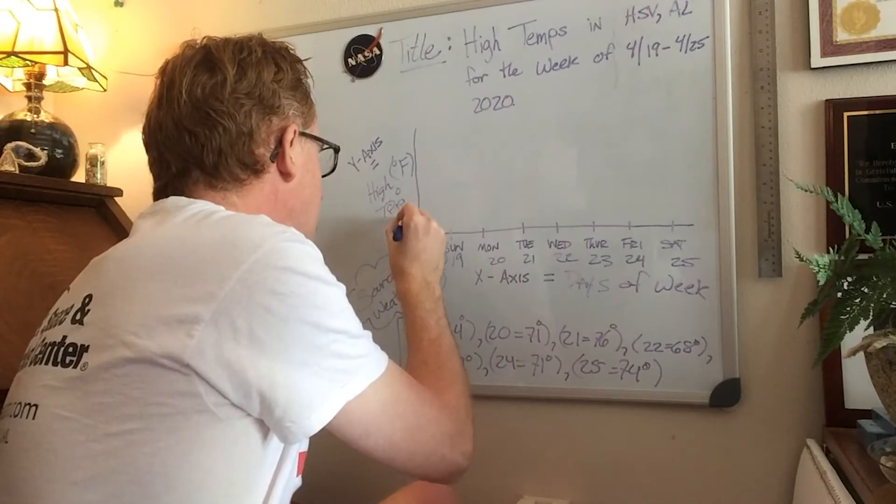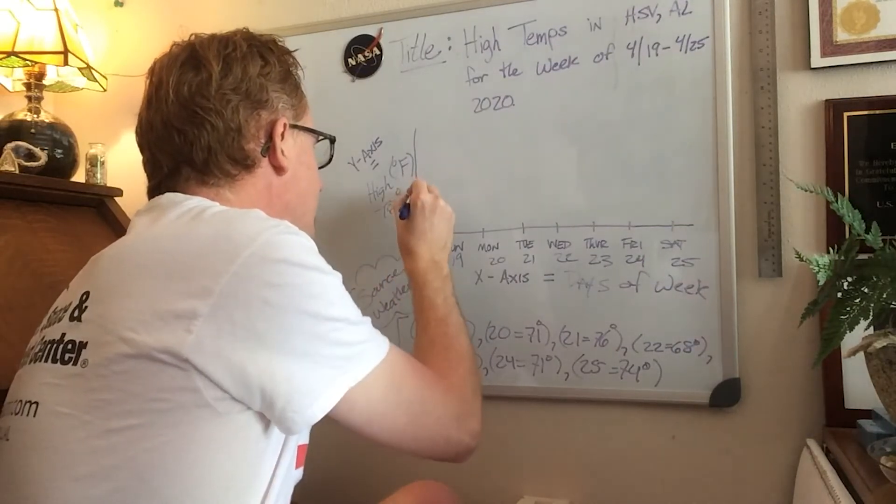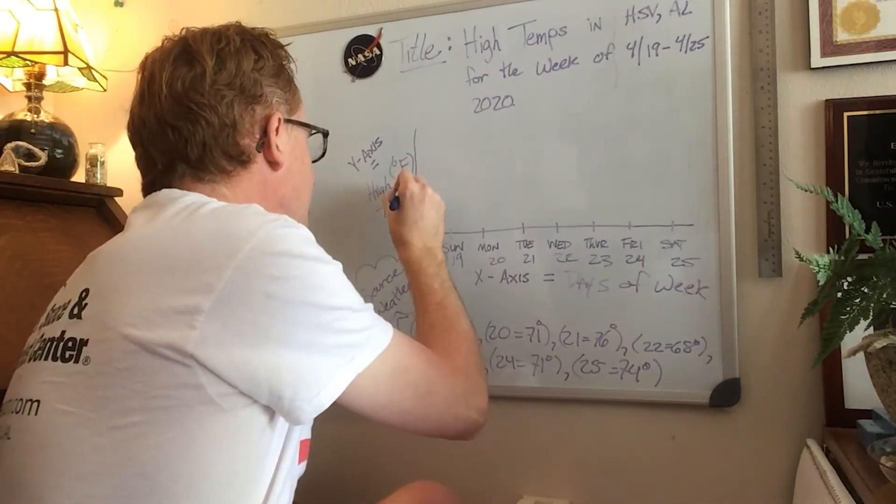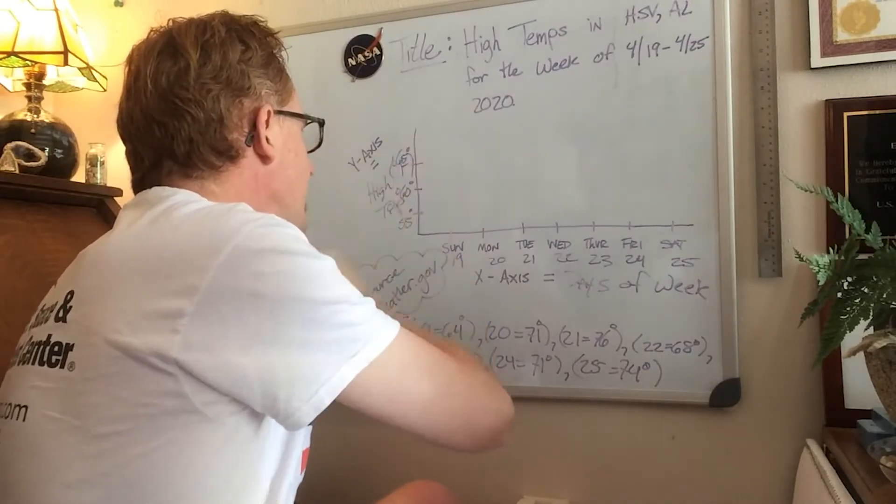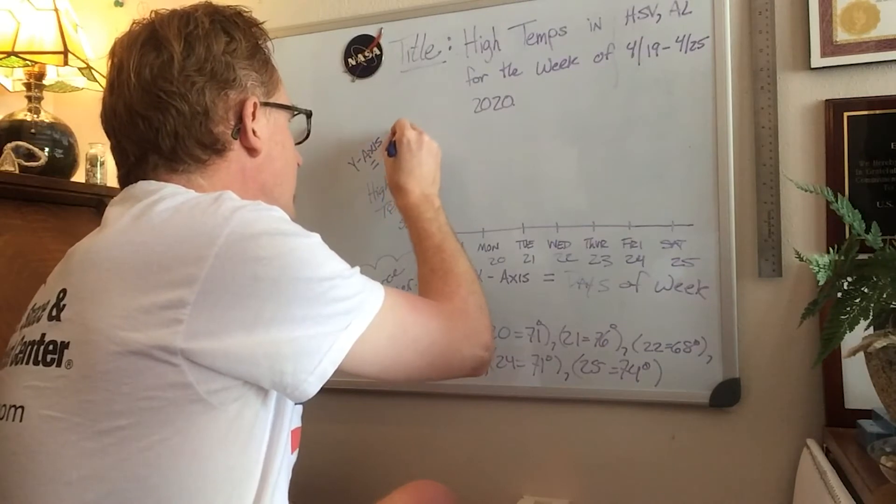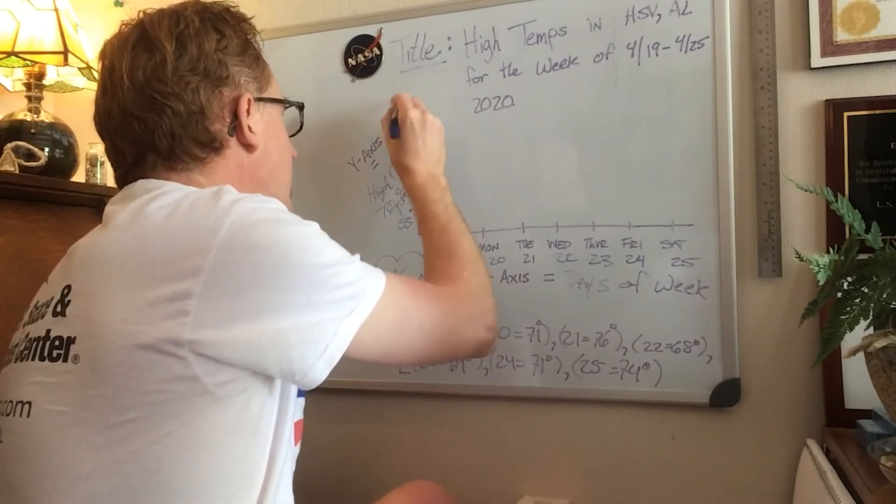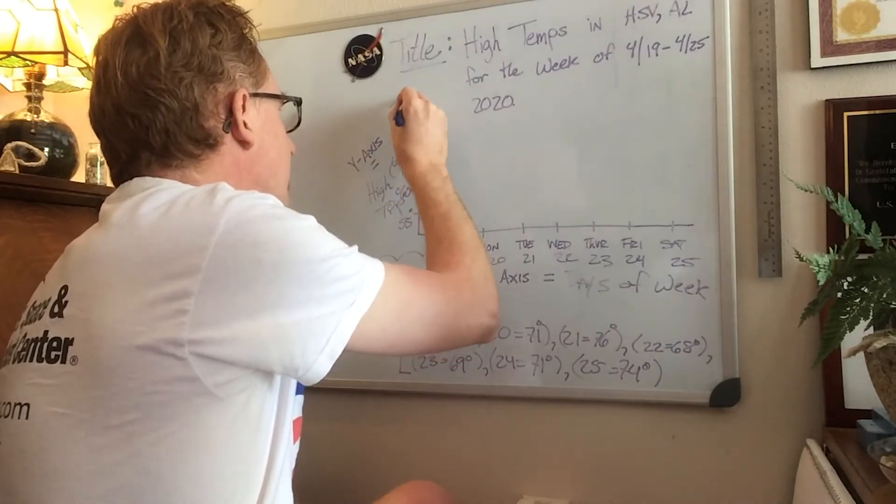So I'll do 55 degrees and then do 60 degrees, 65 degrees, 70 degrees, and then 75 degrees.